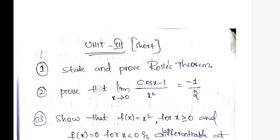Second question: prove that limit x tends to 0, cos x minus 1 by x square equals minus 1 by 2.